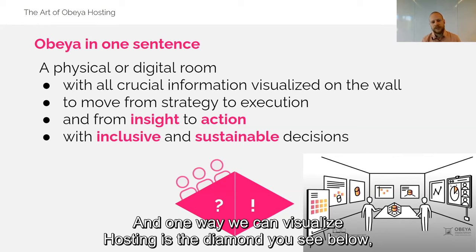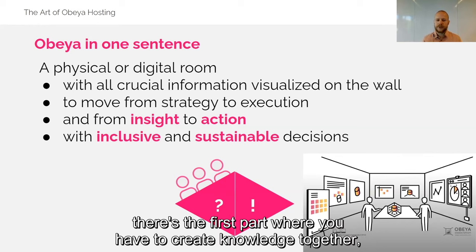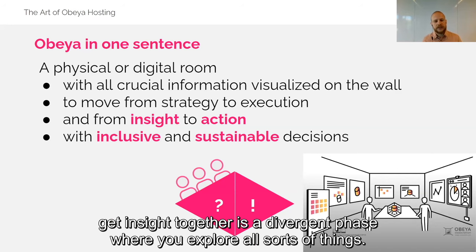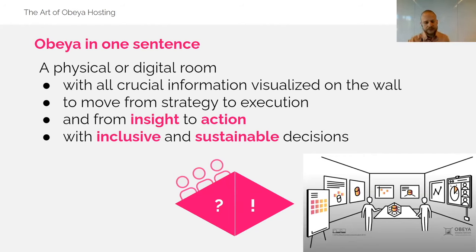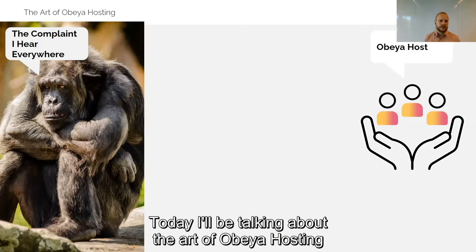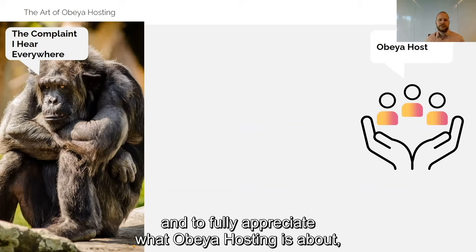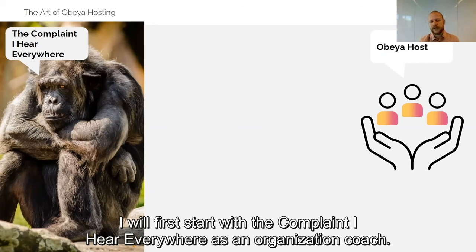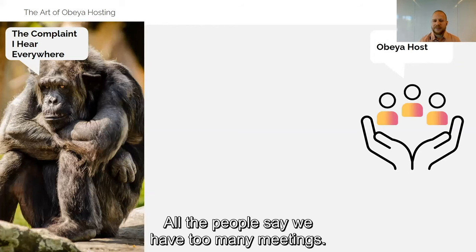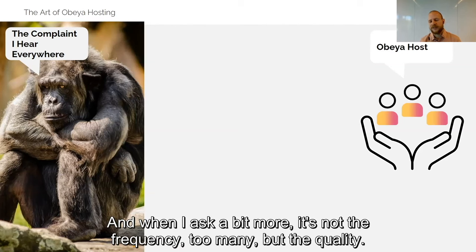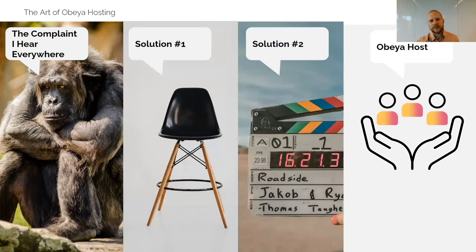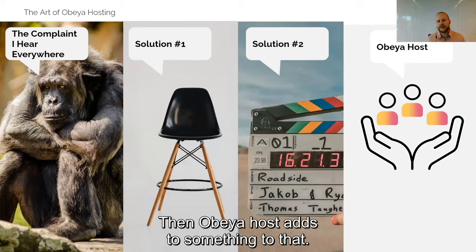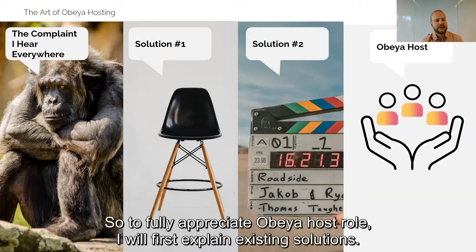One way we can visualize hosting is the diamond: there's a first part where you create knowledge together and get insight — a divergent phase where you explore. Then there's a moment you turn knowledge into action and make a decision, and it's inclusive. Today I'll be talking about the art of Obeya hosting. To fully appreciate what it is, I'll first start with the complaint I hear everywhere as an organization coach: all the people say we have too many meetings. And when I ask a bit more, it's not the frequency but the quality.